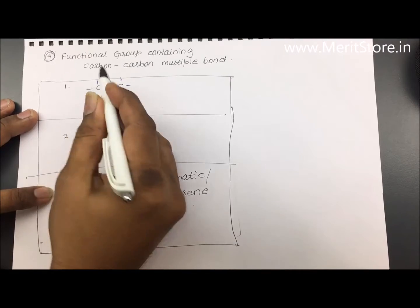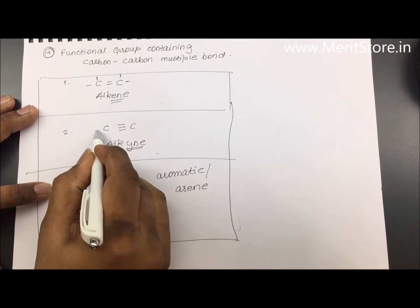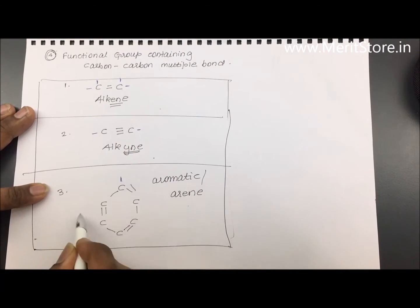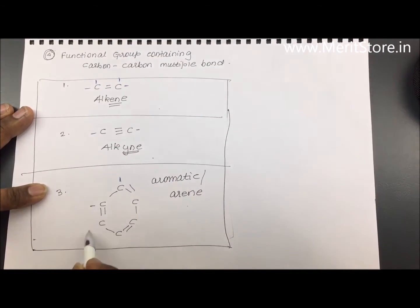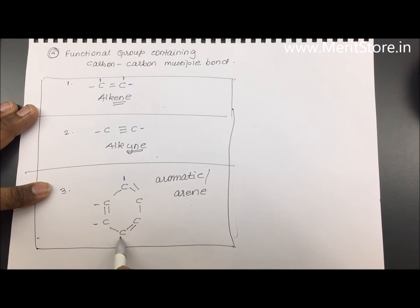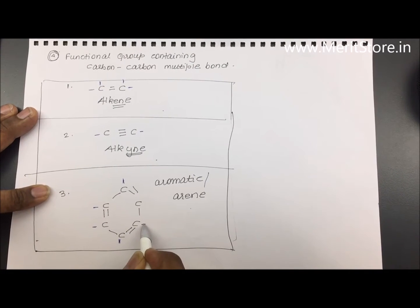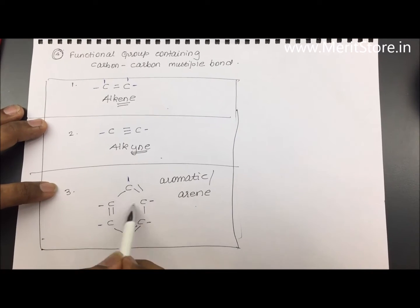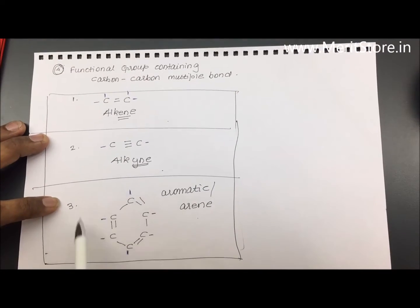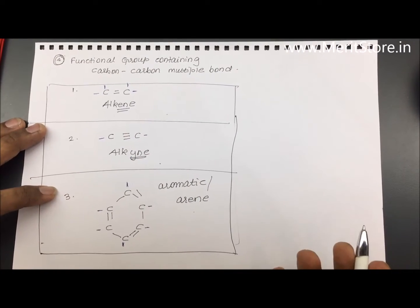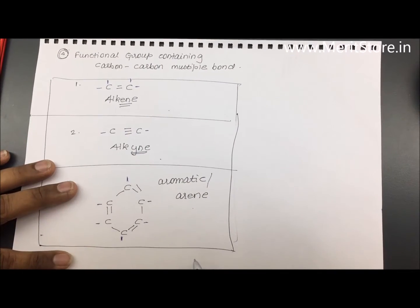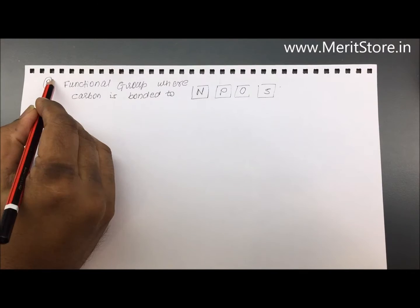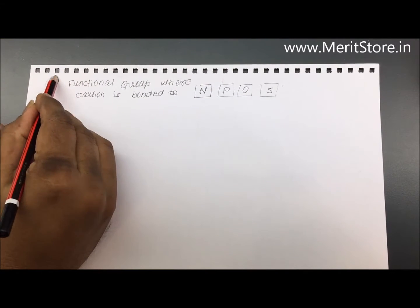You must understand that carbon has valency 4. In every case, the remaining valencies are satisfied by whatever is present. Every time you look at a carbon, it is understood that the remaining valencies not mentioned are being satisfied mostly by hydrogen, because we are talking of hydrocarbons.